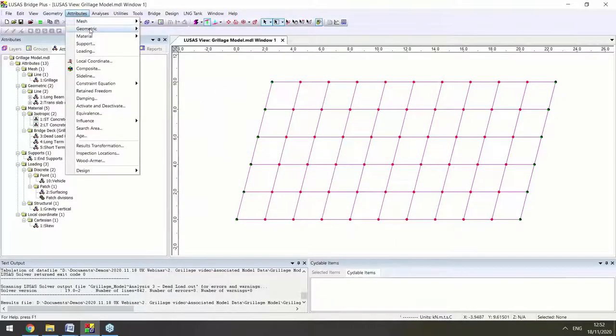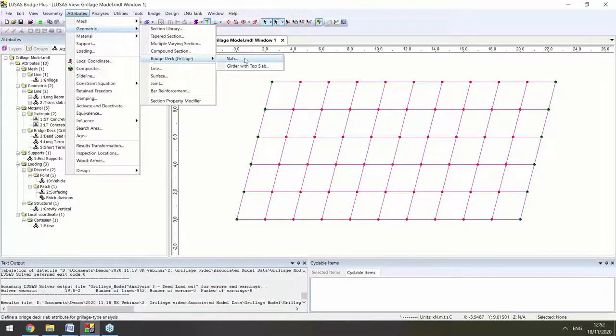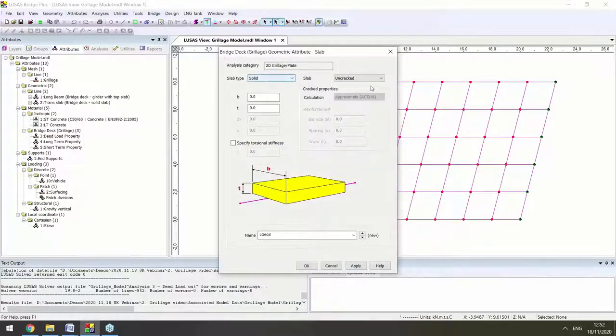For your transverse sections, we can also define your slab, which can be cracked or uncracked once more. And also if we're doing a voided slab deck rather than beam and slab, we also have voided options for defining the slab.